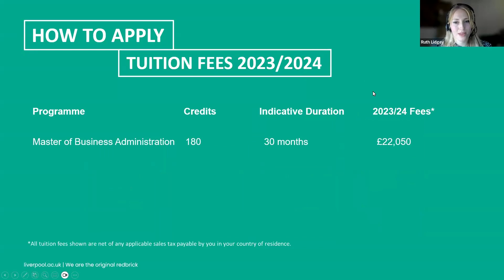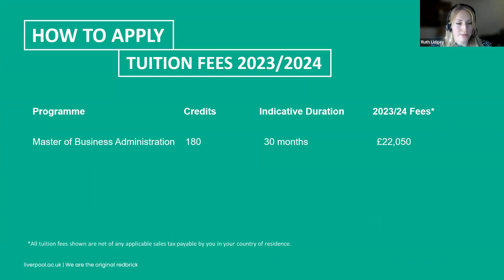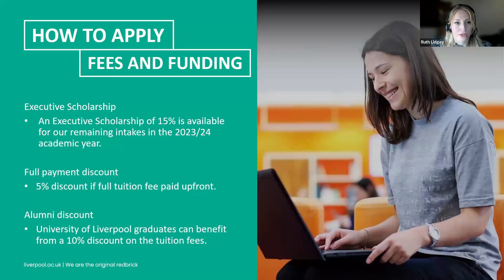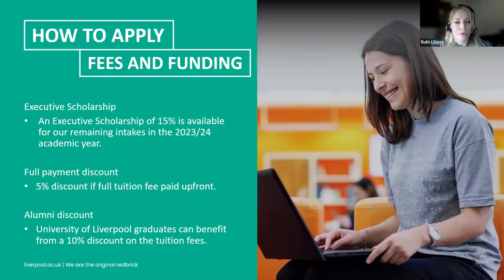If successful, your admissions advisor will notify you and you'll be sent an offer letter. You'll need to accept the offer and make a deposit or full payment within 14 days to confirm your place. The online MBA is part-time and lasts 30 months — a full 180-credit program. The total cost is £22,500, but we have scholarships available. Currently there is a 15% Executive Scholarship for the remaining intakes of this academic year — the April 16th and July 9th start dates. You can pay in monthly installments, or get an additional 5% discount for paying the full fee up front. University of Liverpool alumni receive a 10% discount, though this cannot be combined with the Executive Scholarship.